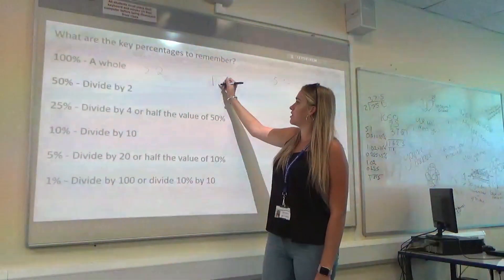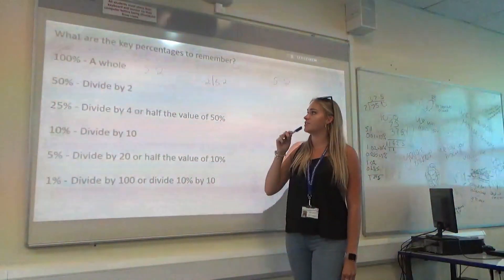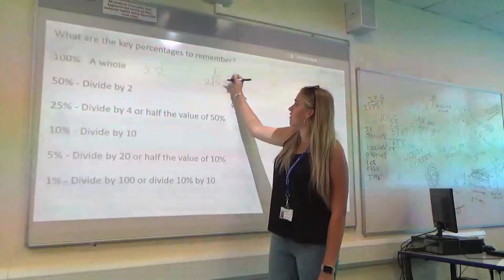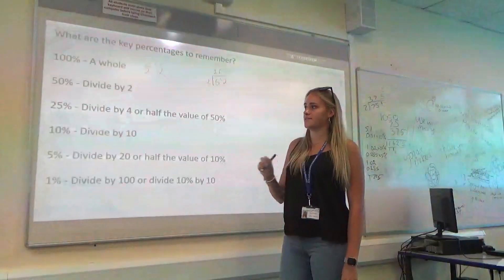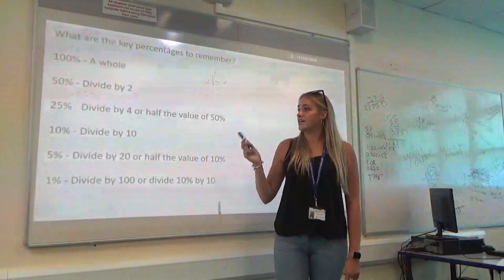If you're unsure, we're going to use the bus stop method. So, we want to look at 2 into 52. So, 2 into 5, we know go twice. Remainder are 1. And 2 into 12 go 6. So, we know that 50% of 52 is 26.